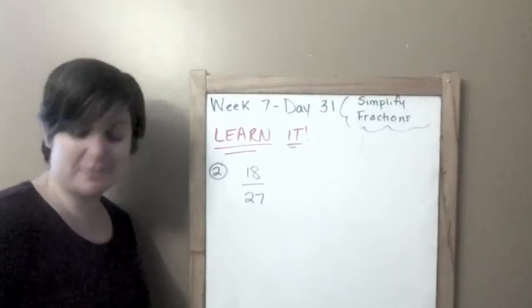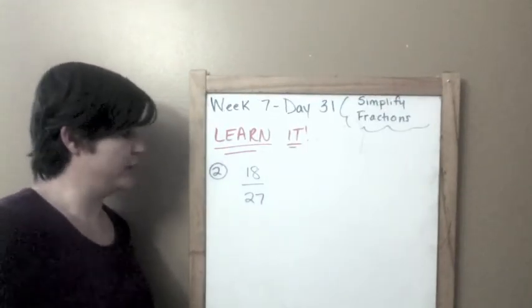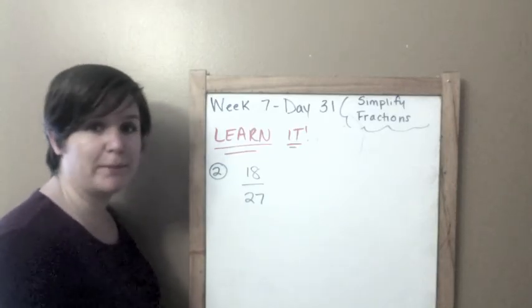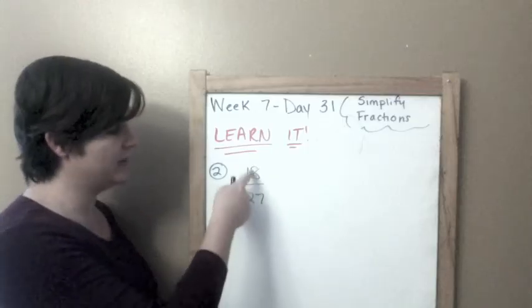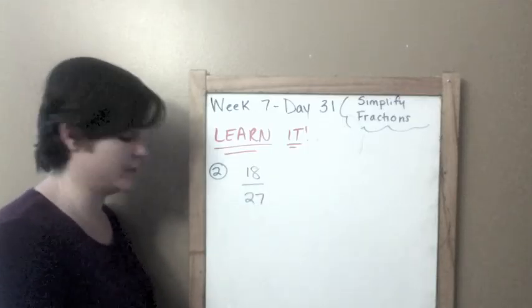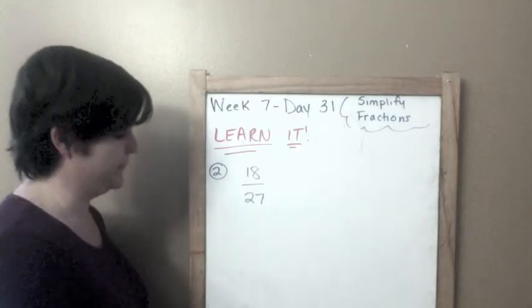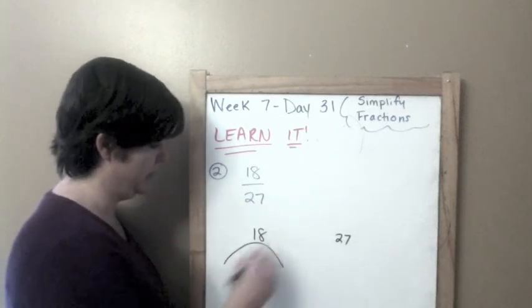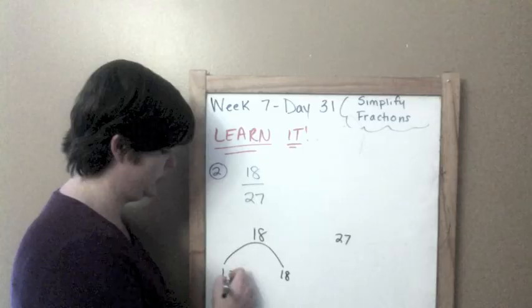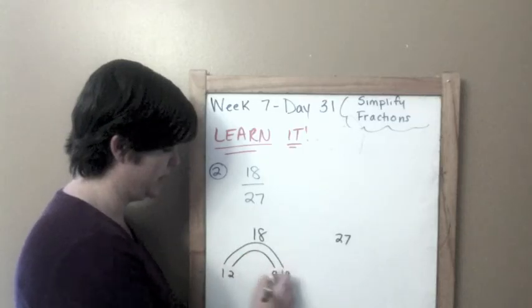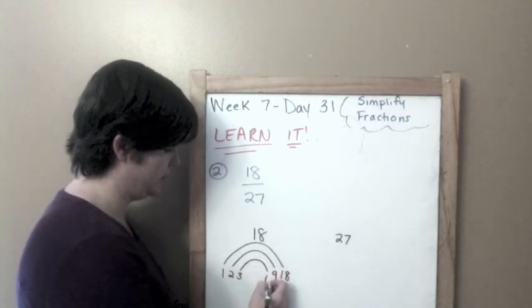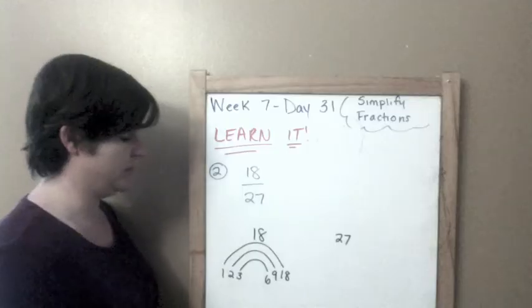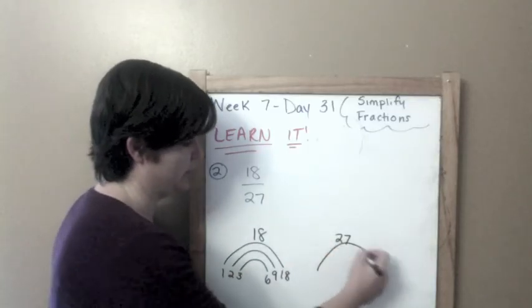Number two. We are on number two for the Learn It section. We have 18/27. We're going to do it our factor rainbow way. And here you see, these do not end in zero, so I can't just cancel out any zeros. I've got to do it the old-fashioned way. We have 18 and 27. I need to find the factors of both. 1 times 18, 2 times 9, 3 times 6, and those are our factors of 18. Factors of 27: 1 and 27, 3 times 9 is 27. Those are our factors of the two numbers.